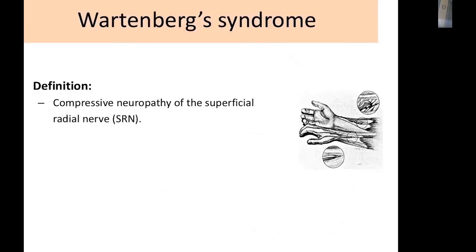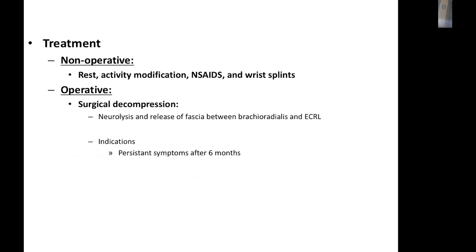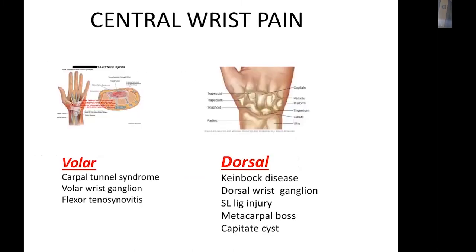Wartenberg syndrome is compressive neuropathy of the superficial radial nerve, associated with neurological manifestations including paraesthesia and hypoesthesia. Treatment is initially non-operative with rest, activity modification, and splints; surgical decompression is performed if conservative treatment fails.